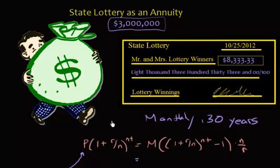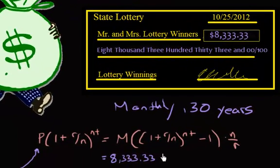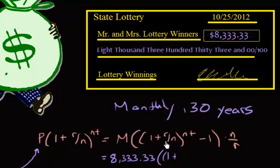So what do we know? We know the monthly payment, which is $8,333.33. We have an interest rate — let's say they team up with an insurance company and they can get an interest rate of 5%. And this is going to be monthly for 30 years.